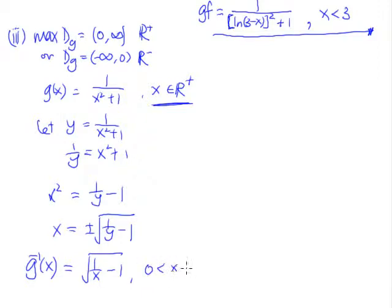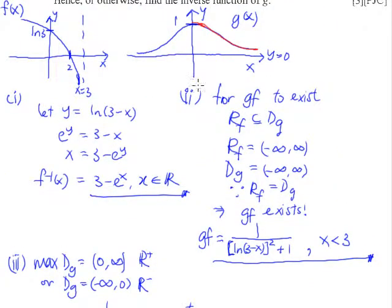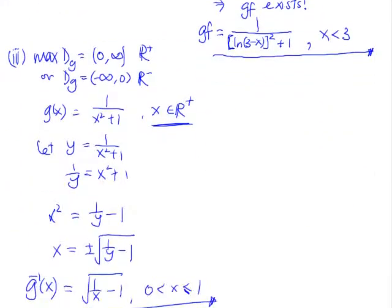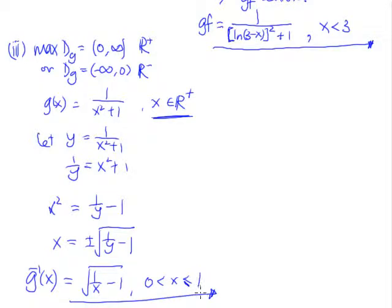Therefore, the domain of g inverse will be from 0 to 1 as well — inclusive of 1. Why inclusive of 1? Because the domain of g includes 0 (since it's all real values), and therefore the range of g includes 1. Since the range of g includes 1, the domain of g inverse also includes 1.